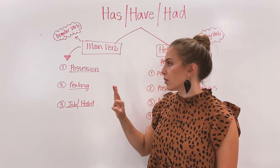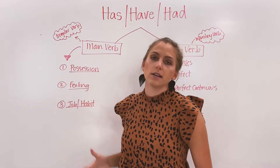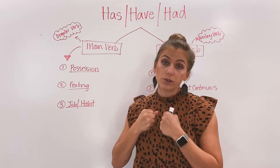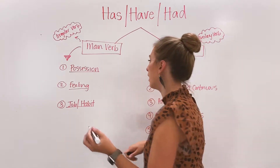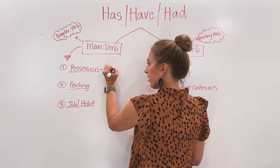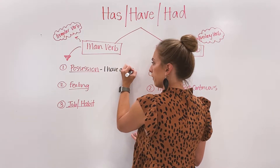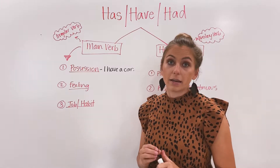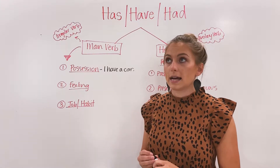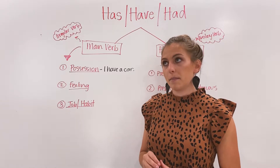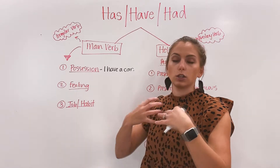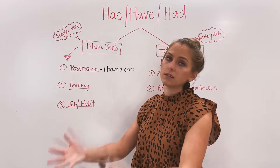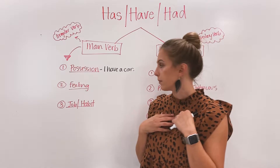We can use it if we are talking about possession — something that we have on our own, something that is ours. For example: I have a car. The car is mine. It is my possession. You have a bicycle. She has a ring. They have a house. Anything that is your possession, we can use this verb for.